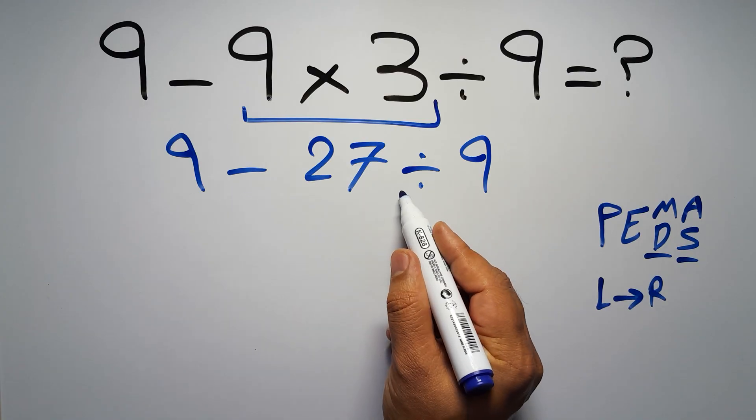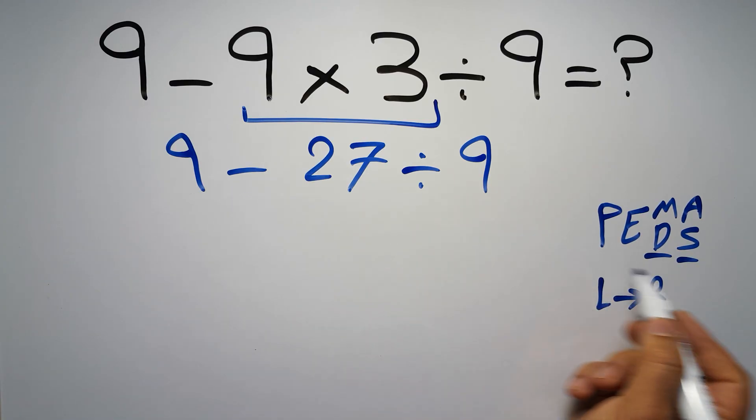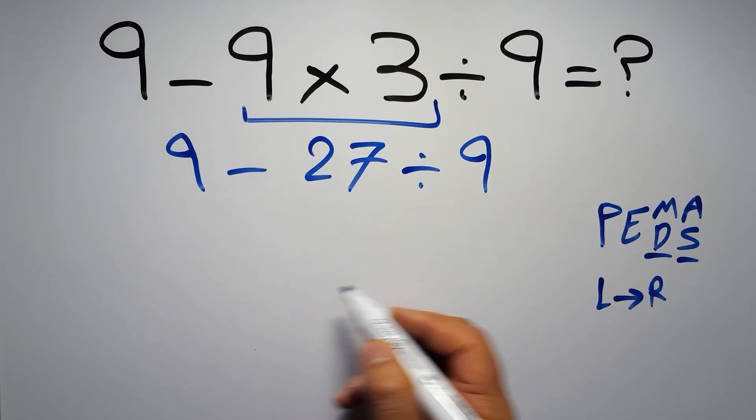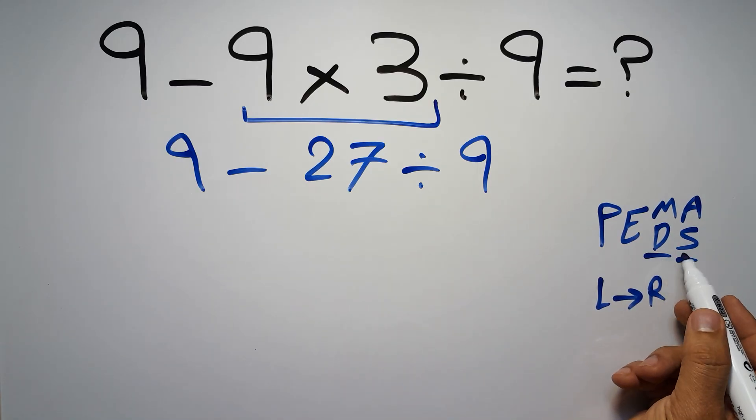According to the PEMDAS, division has higher priority than subtraction because division comes before subtraction.